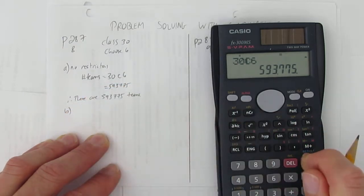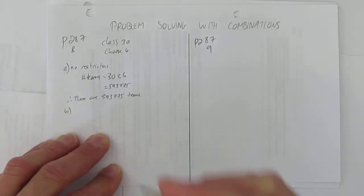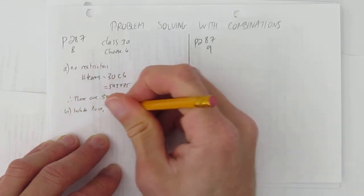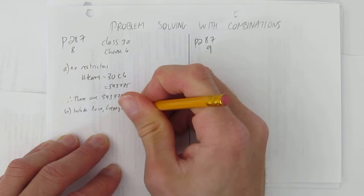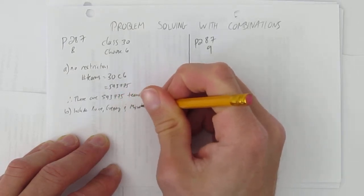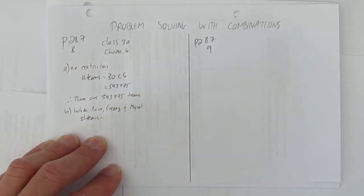Part B says Pierre, Gregory, and Miguel are students in this class. How many of the teams would include these three students? So include Pierre, Gregory, and Miguel. Well, if we have to include those three, then really our number of teams just changes our choices.